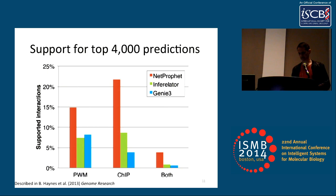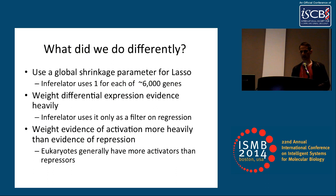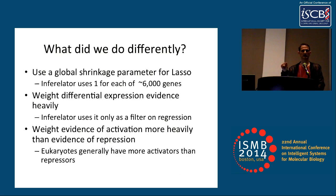What did we do differently? One thing is we used a global shrinkage parameter for lasso, whereas Inferlator uses one parameter for each of 6,000 genes and may have overfit those shrinkage parameters. We also weighted differential expression evidence heavily relative to regression evidence, whereas Inferlator uses differential expression only as a filter. For example, if a target gene was strongly differentially expressed when a transcription factor is deleted — but without good overall correlation — we would still call it a good prediction, whereas Inferlator would reject it. Finally, we weighted evidence of activation more heavily than evidence of repression, reflecting that eukaryotes generally have more activators than repressors.